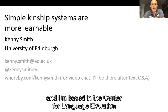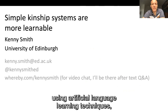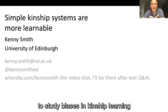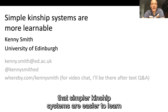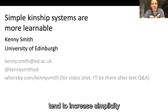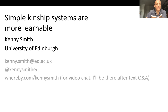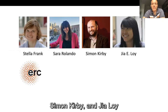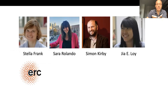Hi, my name is Kenny Smith and I'm based in the Centre for Language Evolution at the University of Edinburgh. I'm going to present three experiments using artificial language learning techniques to study biases in kinship learning. This is joint work with Stella Frank, Sarah Rolando, Simon Kirby and Gia Loy, and parts of it were funded by the European Research Council.